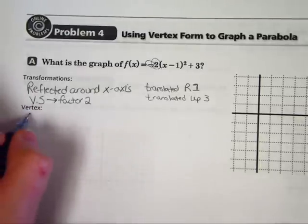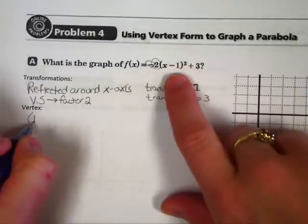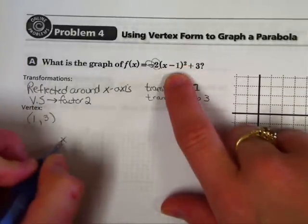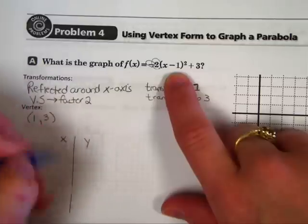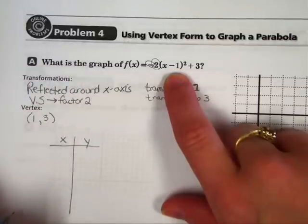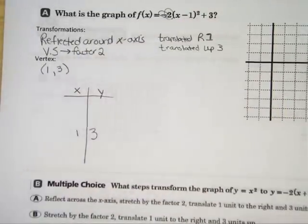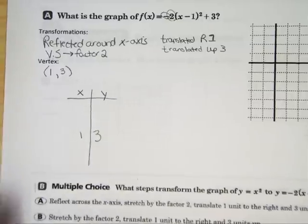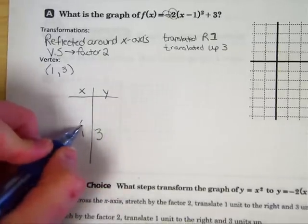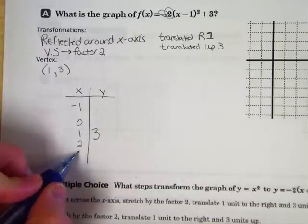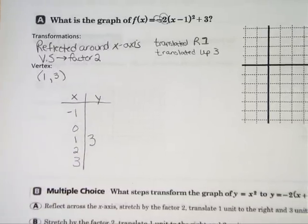The vertex is the opposite of what's with the x, positive 1, and what's on the outside, a 3. Make your x-y chart. Put your vertex in the middle. And surround your vertex by the points that correspond. So a little lower than 1 is 0 and -1. A little higher is 2 and 3.